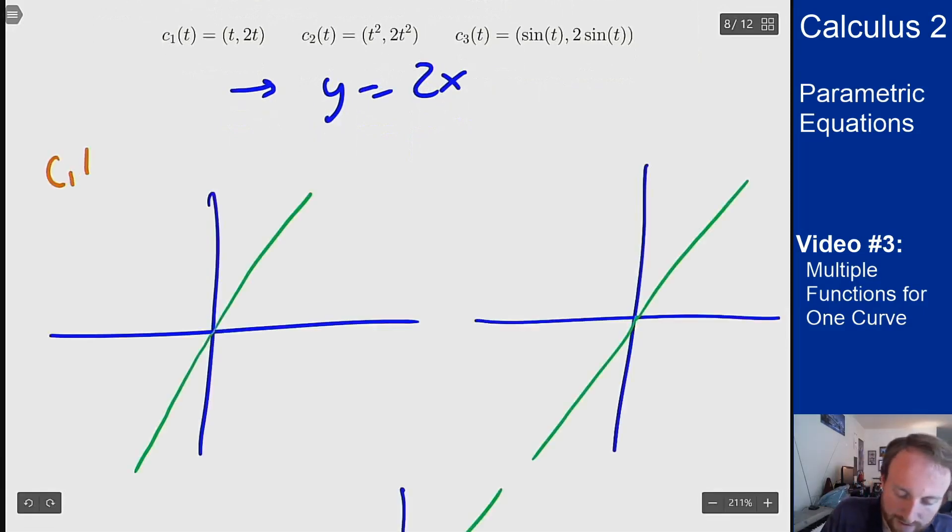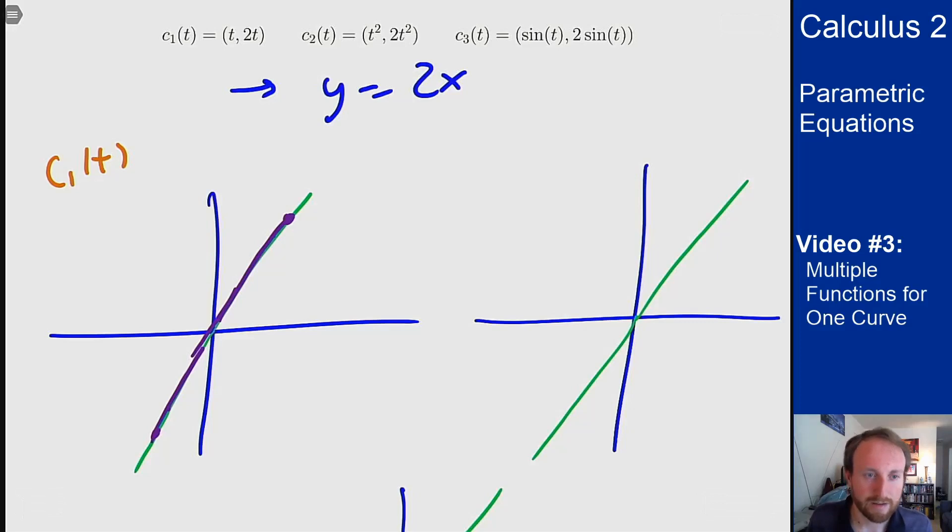For c₁(t), how does this trace out the curve? For every value of t, I'm at x-coordinate t and y = 2t. If I let t vary from -2 to 2, I trace out from -2 up to 2. If t goes further, I trace out the entire line.